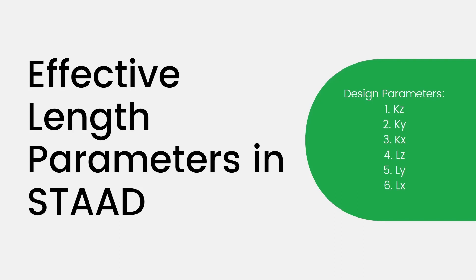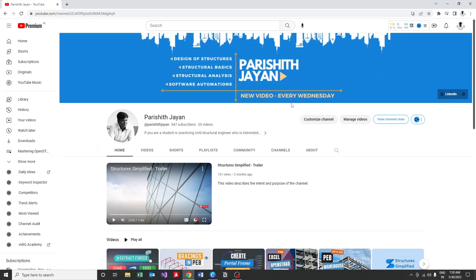If you are struggling to decide the design parameters for the steel building, you should go through this video in full. We are going to cover design parameters like LZ, LY, LX, KZ, KY, and KX for steel design — in simple words, demystifying the art of deciding effective length parameters in STAAD software. Welcome back to the channel. My name is Parshid Jain, a structural engineer focused on creating content to help civil and structural engineers work efficiently and productively.